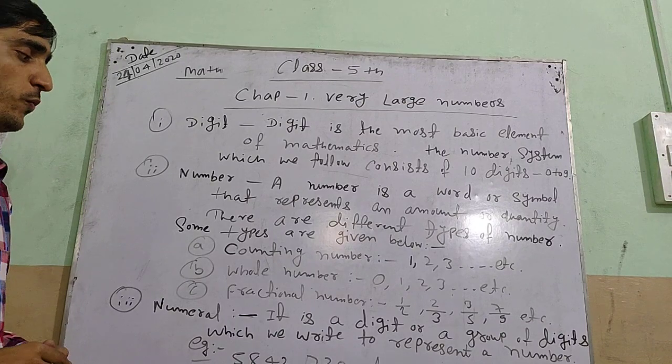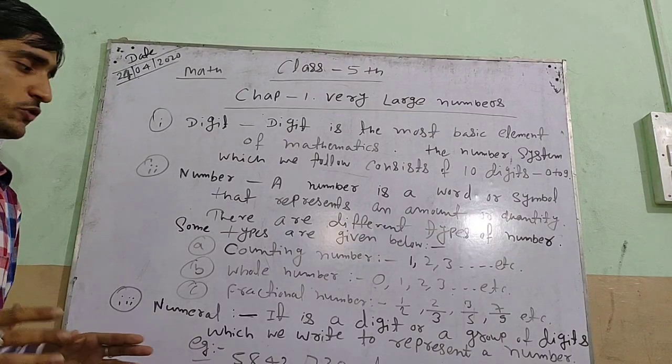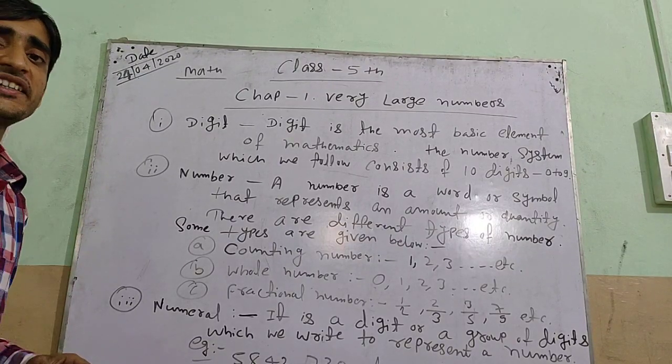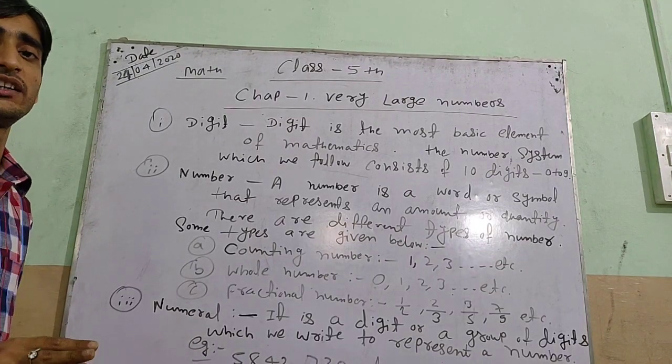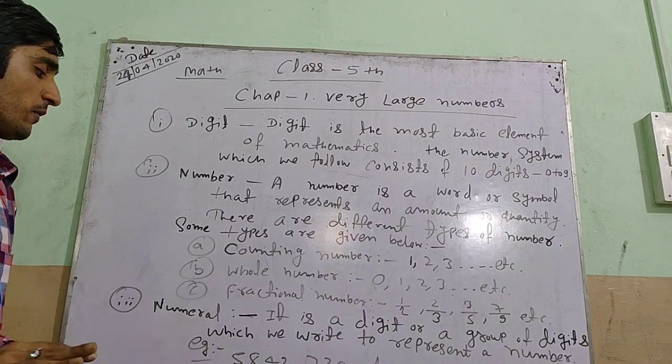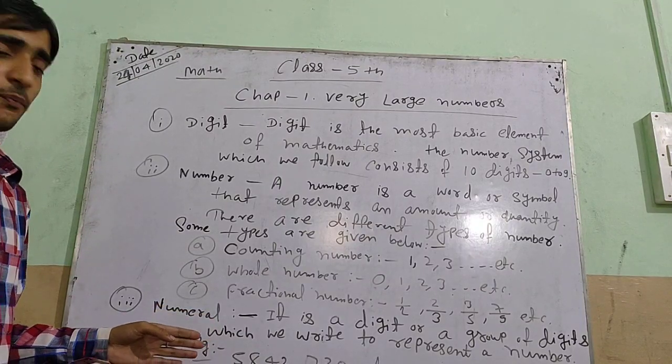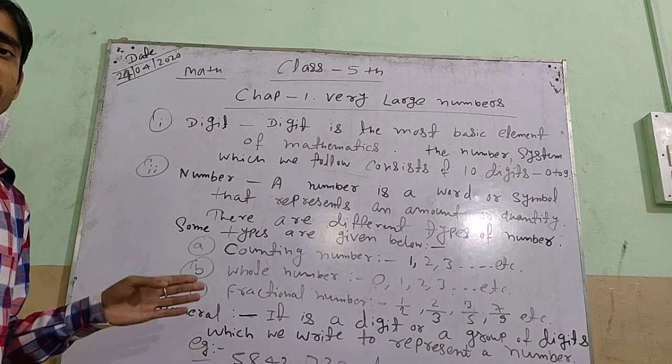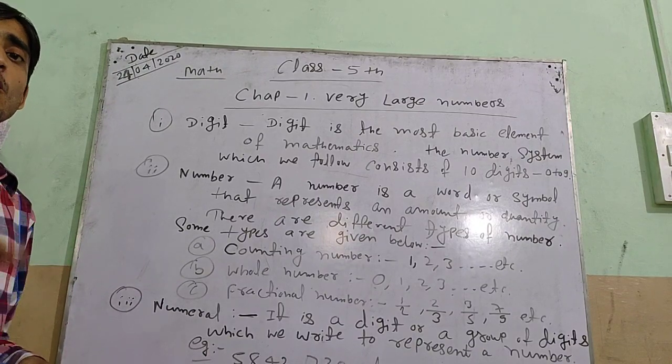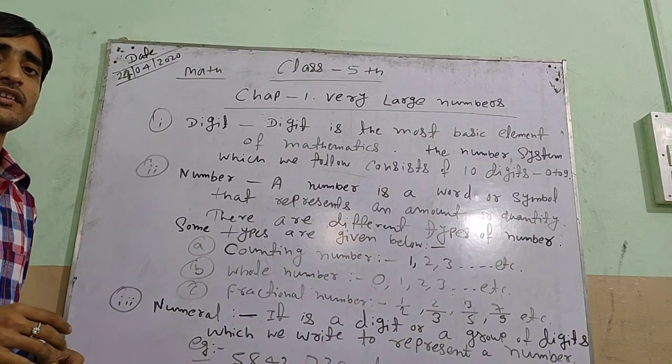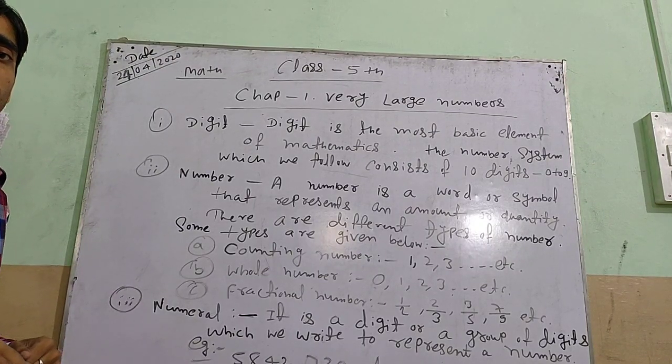It is a digit and a group of these which we write to represent a number. Number is equal to 5,840, or 1 by 720, or 20. So simply, numeral is a term of a numerator and denominator also.